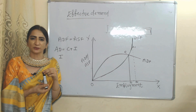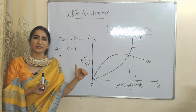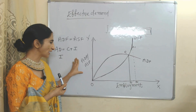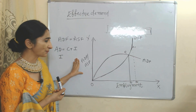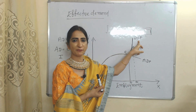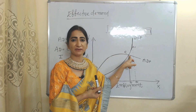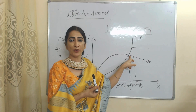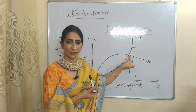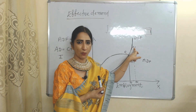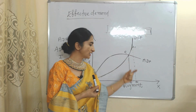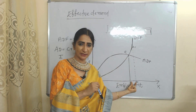Effective demand is the point of equilibrium where the aggregate demand function equals the aggregate supply function. In the diagram, on the x-axis we have employment, on the y-axis we have aggregate demand price and aggregate supply price. Point E is called the effective demand point because at E the aggregate demand function equals the aggregate supply function. However, E is not the full employment point — full employment is at E1. At point E, there is NN1 unemployment in the economy.